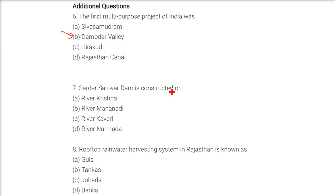Sardar Sarovar Dam is constructed on which river? The answer is River Narmada. There is also the Narmada Bachao Andolan NGO movement going on.